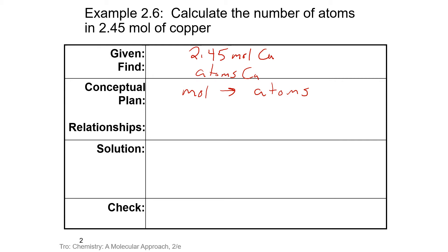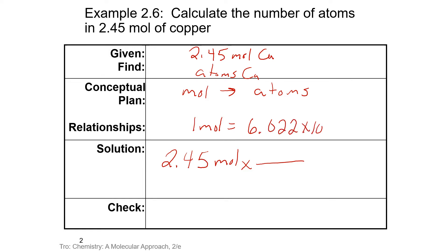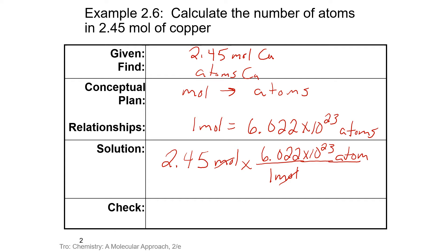We can set up our problem: 2.45 moles. We want the moles to cancel. We know that one mole is 6.022 times 10 to the 23rd atoms, so one mole goes on the bottom and 6.022 times 10 to the 23rd atoms goes on top. We can solve this and see that we get 1.48 times 10 to the 24th atoms of copper.